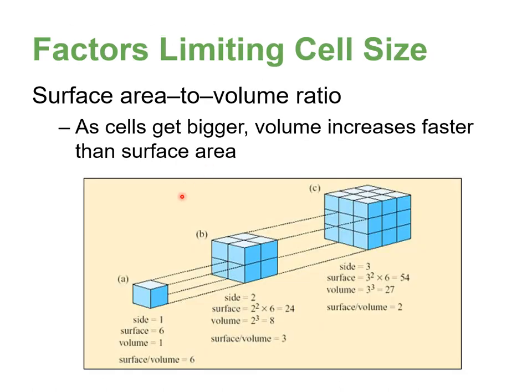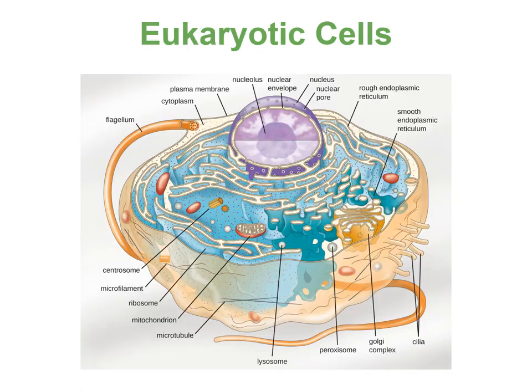As cells get bigger, volume increases faster than surface area. So essentially we just don't have the space, especially for our unicellular organisms that are so much smaller. Prokaryotes also lack the modifications found in eukaryotes that aid internal transport.